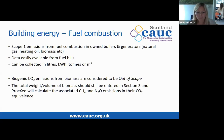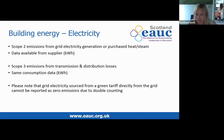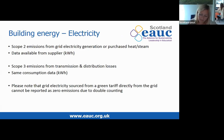Moving on to electricity from the grid: grid electricity generation is classed as a scope 2 emission and consumption data is easily available from your supplier. It's also important to report transmission and distribution losses from grid electricity, which are classed as a scope 3 emission — you use the same consumption figures in kilowatt-hours but these are listed as a separate entry in PropX. Please note that electricity sourced from a green tariff directly from the grid cannot be reported as zero emissions due to double counting.